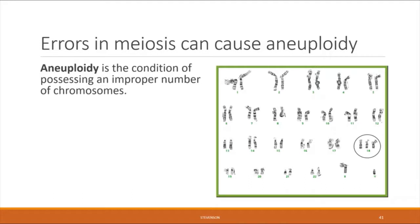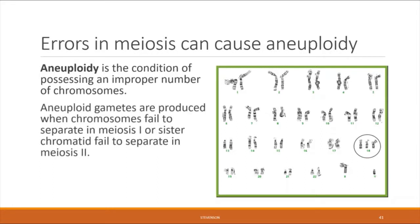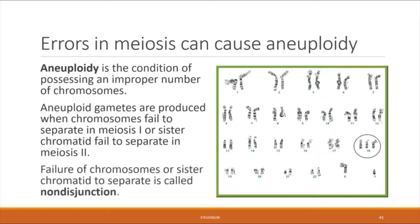Just like things can go wrong in mitosis and lead to cancer, things can go wrong in meiosis as well. Errors in meiosis lead to chromosomal aneuploidy, defined as the condition of possessing an improper number of chromosomes. This is caused by a failure of chromosomes to separate during anaphase of meiosis one, or a failure of sister chromatids to be pulled apart during anaphase of meiosis two. This phenomenon of failure to separate is called non-disjunction.